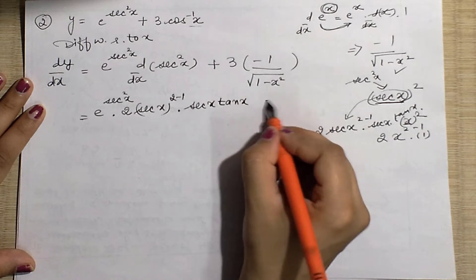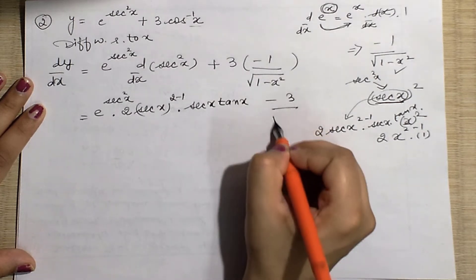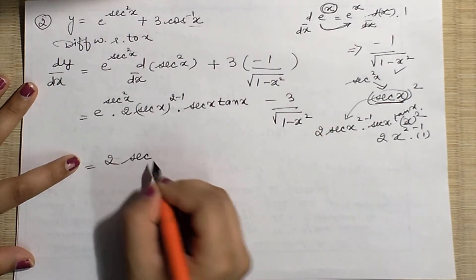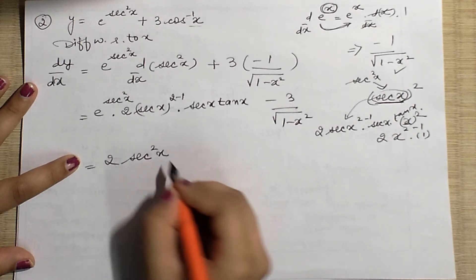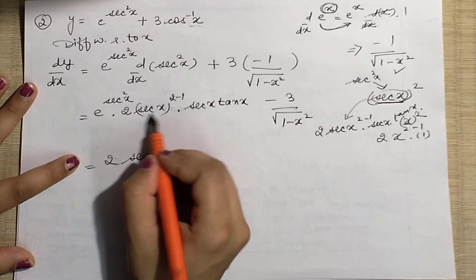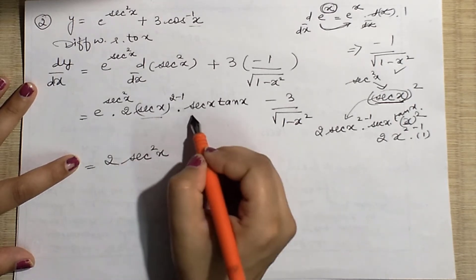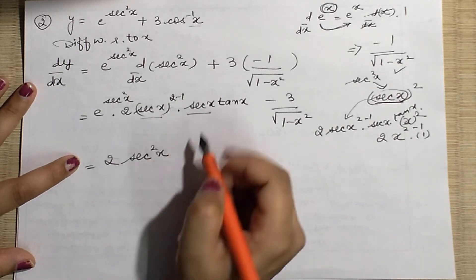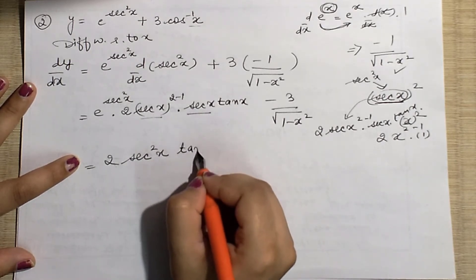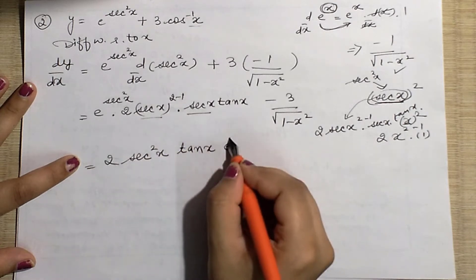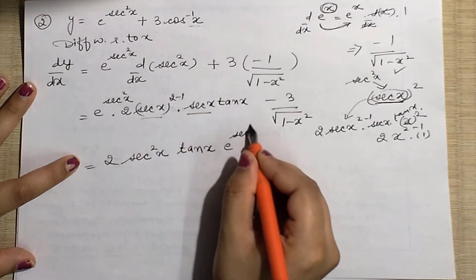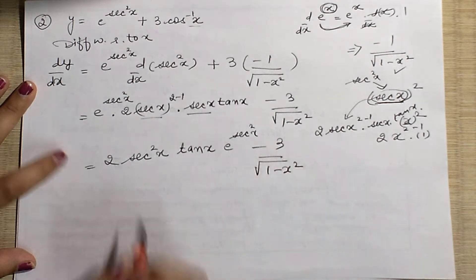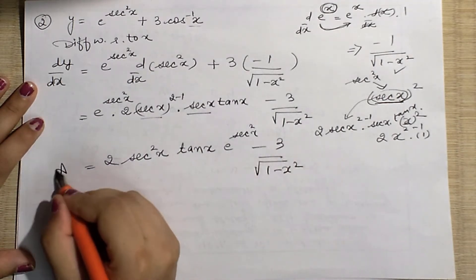Simplifying the chain rule result: 2 sec x · sec x · tan x = 2 sec²x · tan x. So combining with the exponential and the derivative of 3cos⁻¹x, the final answer is: e^(sec²x) · 2sec²x · tan x − 3/√(1−x²). This is the final answer — it was quite easy.